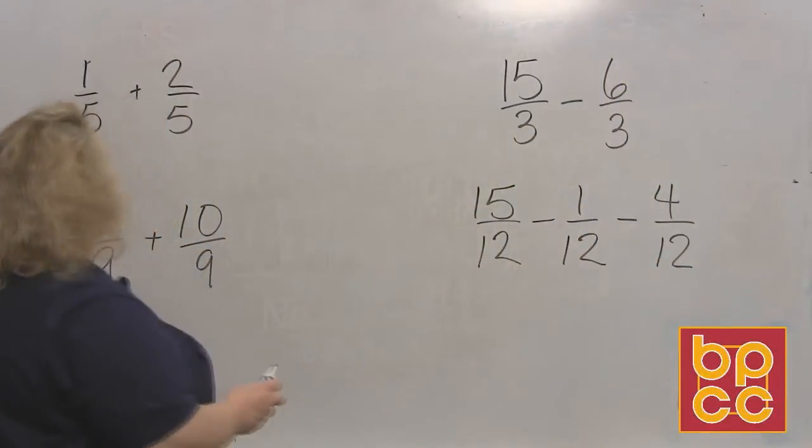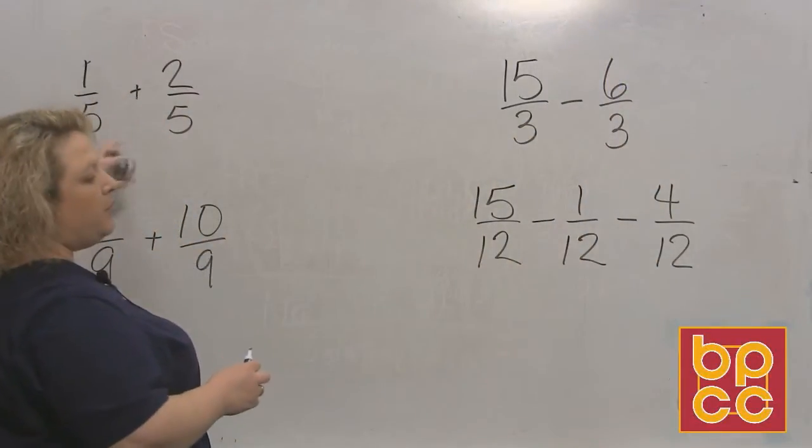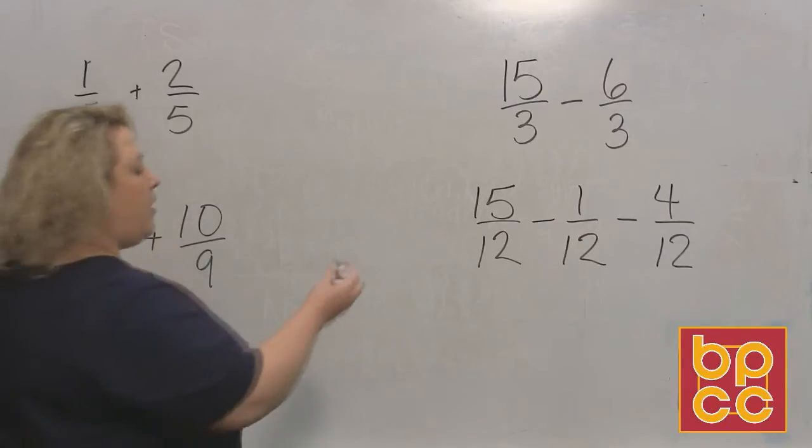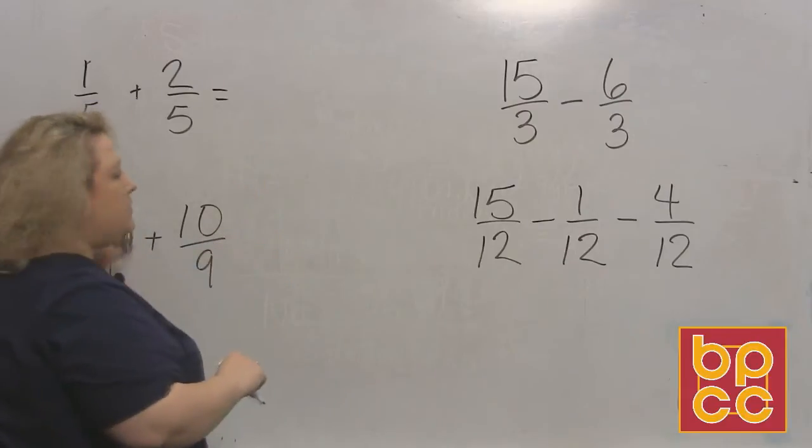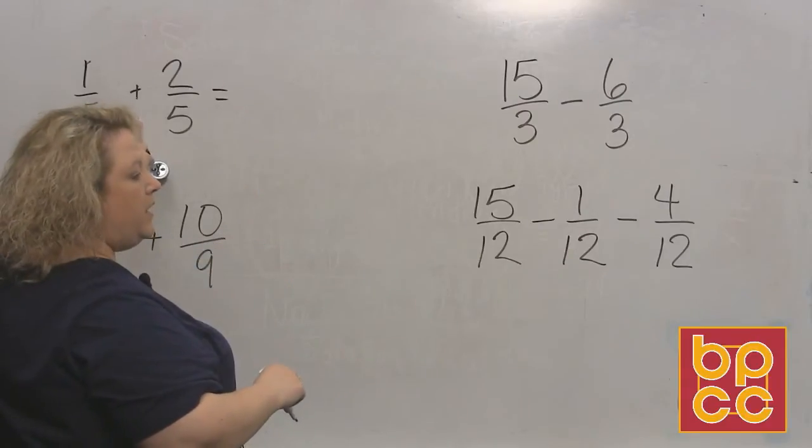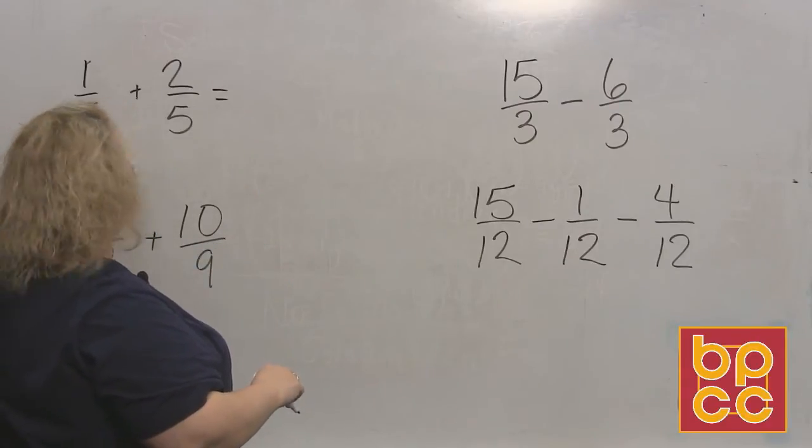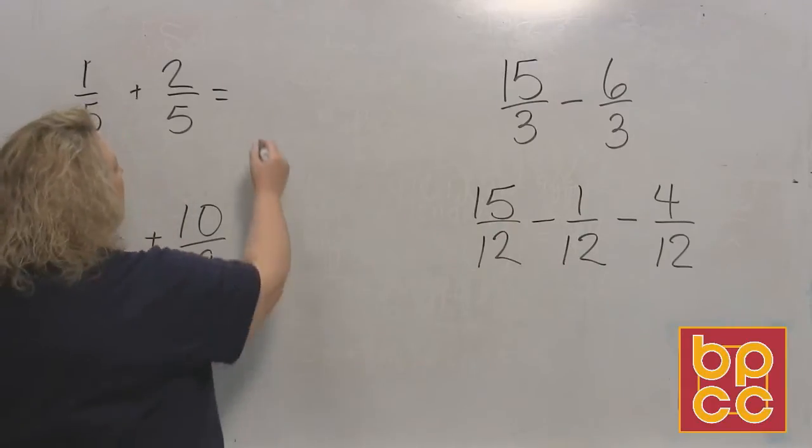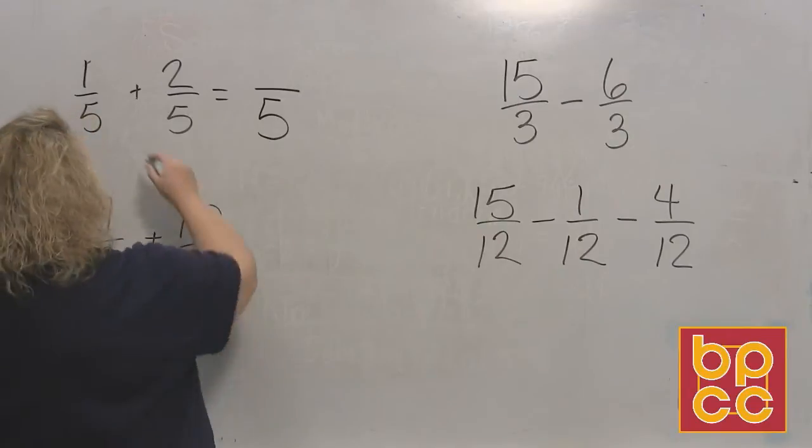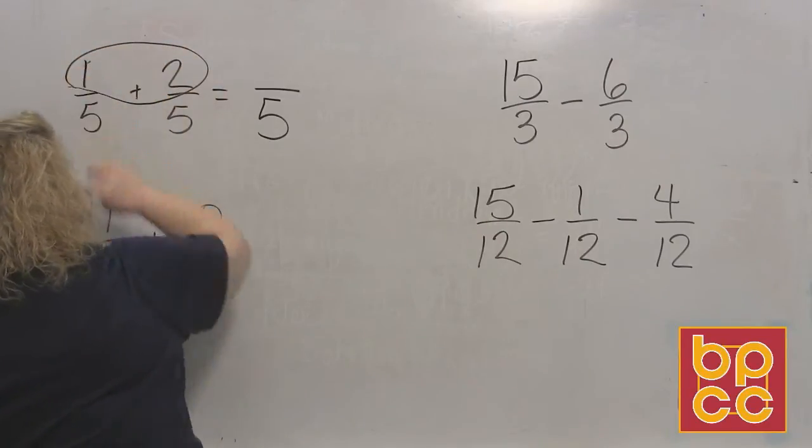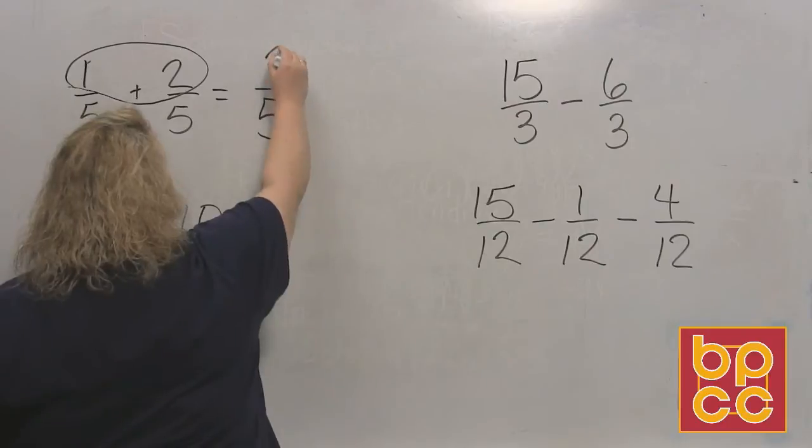Alright, so on the board we have 1/5 plus 2/5. They have like denominators so all we have to do is: adding fractions, which we're doing, easy as can be, all you need is an LCD. We have that. We write the bottom, collect the top. Collect the top means do 1 plus 2, actually work that part out, that gives you 3.